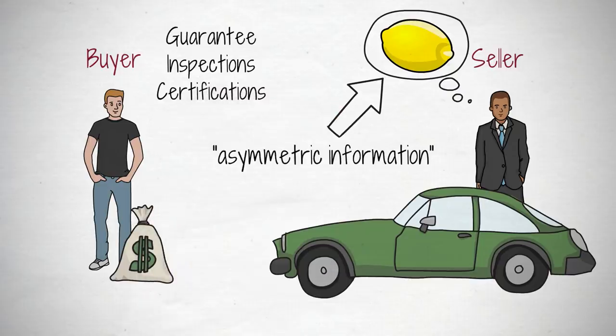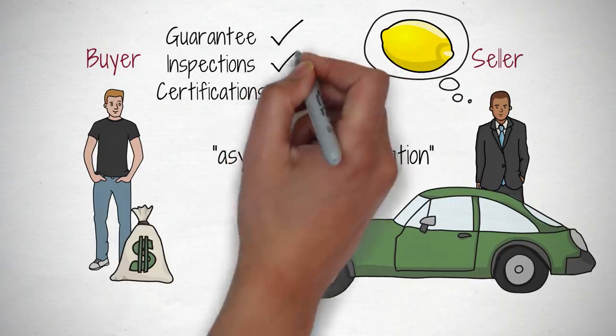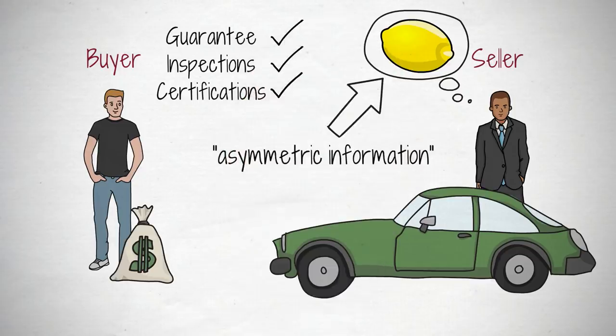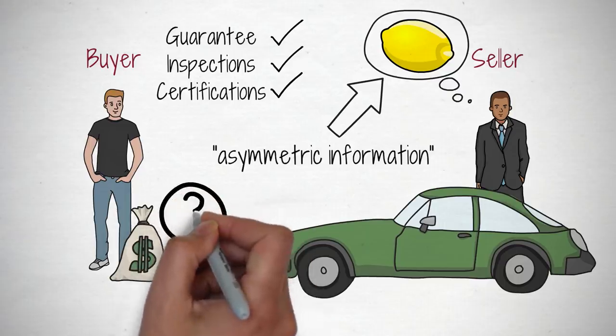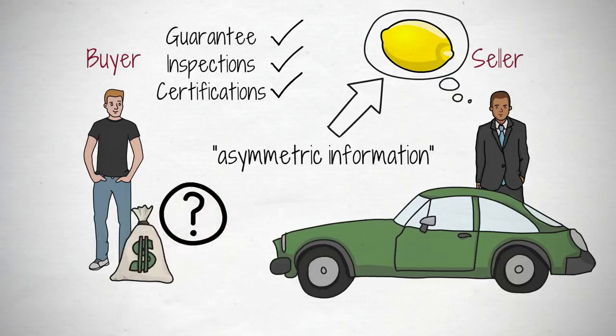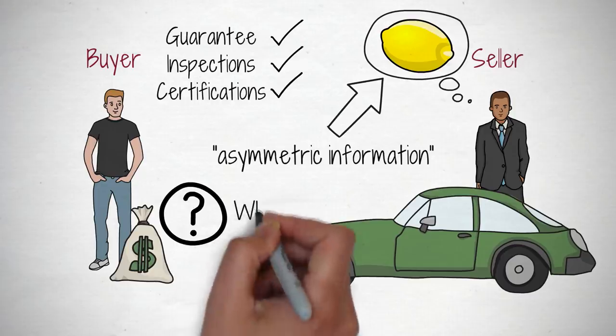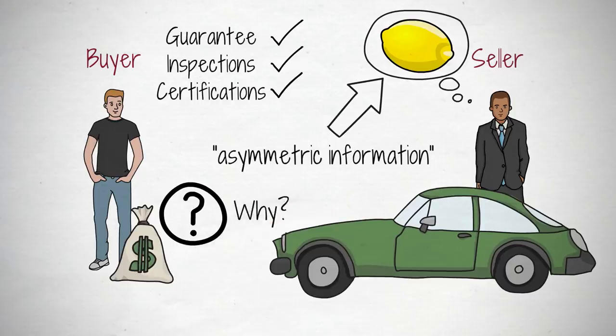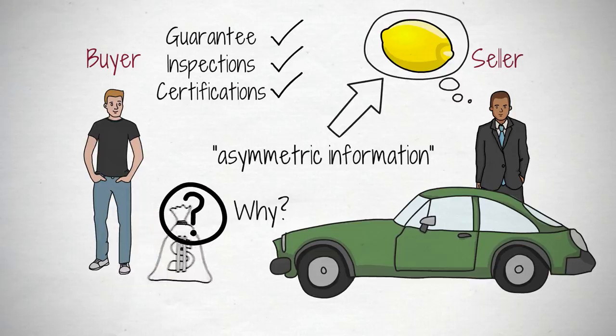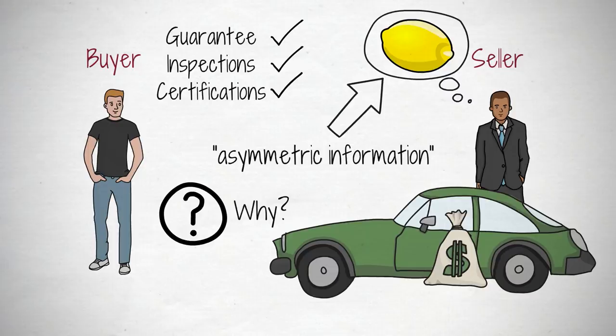While measures to mitigate information asymmetry have been introduced — such as extended guarantees, inspections, and certifications — people still get ripped off every day. Akerlof received the Nobel Prize in economics for his discovery and today, almost 50 years later, every US state has its own variant of the Lemon Law to protect consumers. Yet, we still make bad decisions — not just in purchasing goods, but everywhere.